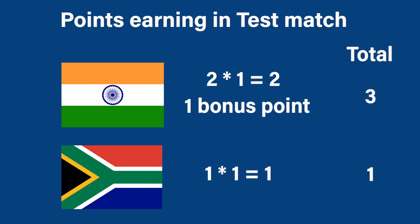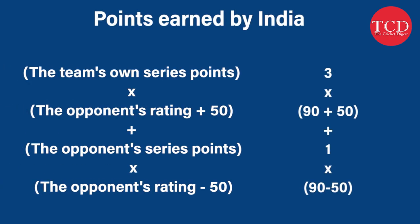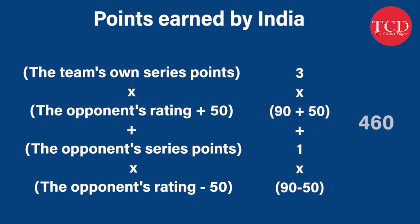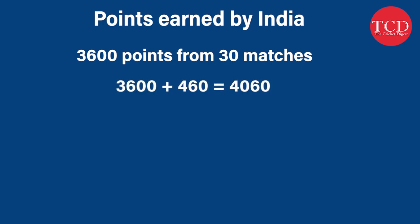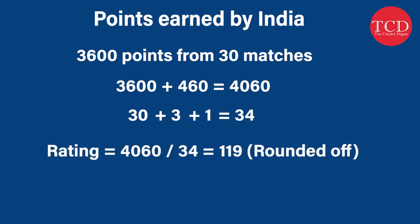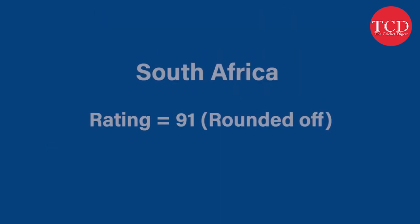Now the total points calculation: India gets 460 points from this series. They had 3600 points before, so their total grows to 4060 points. India had played 30 matches before this series and played 3 matches in this series. One more will be added to the total as a completed series is considered as a match itself, and this series can be of any number of matches. This gives us a rating of 190. Going by the same method, South Africa's new rating would be 91.